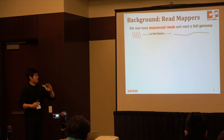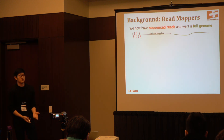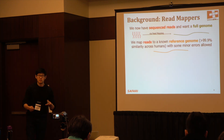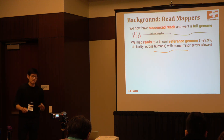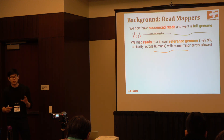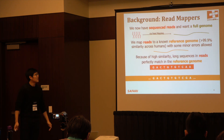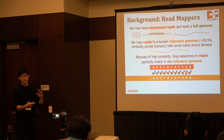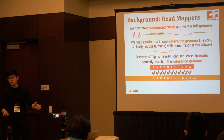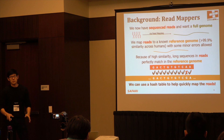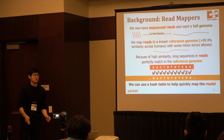The purpose of a readmapper is to take a number of sequenced reads and reconstruct the original genome. We have a reference genome which exhibits around 99.9% similarity across all human samples, so we can take these reads and map them to the reference genome with some minor edits allowed. Those minor edits are the nucleotides that make you unique. Because of this high similarity, we have long sequences in reads that match perfectly to the reference genome. In this example, we have an 11 base pair long read, and 9 sequential base pairs match perfectly within the reference genome at a particular location. We can use a hash table to quickly map reads and reduce the number of locations to search.